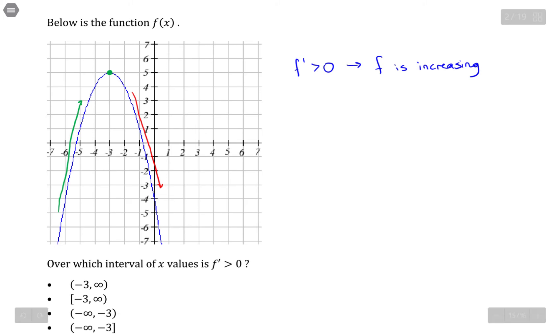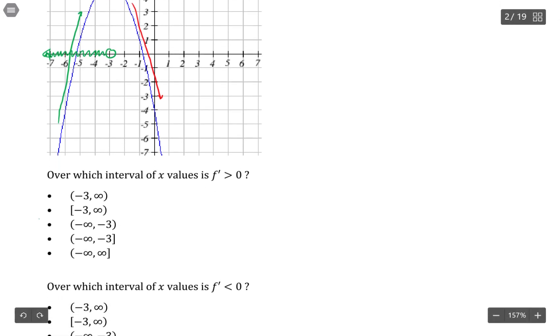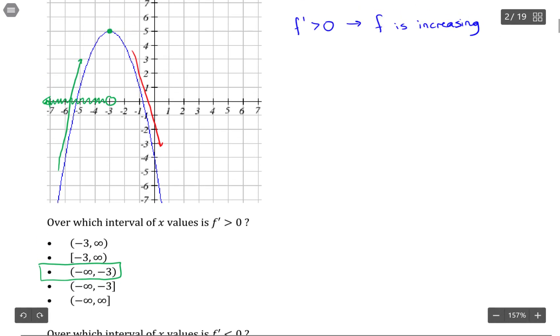So over the intervals from negative infinity up to this particular point right here. So negative infinity to negative 3. And we're not going to include the point itself, because technically there it's neither increasing or decreasing, or you can think of it as doing both. So we'll leave it out of this interval.